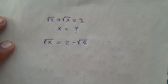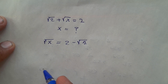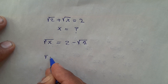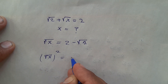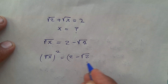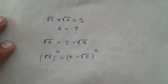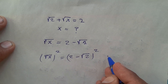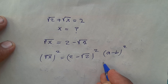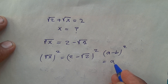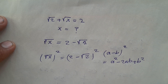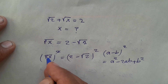And now I square both sides of the equation. This becomes square root of x squared equals to 2 minus square root of 2, whole to the power of 2. So this is in the form of a minus b whole squared, which equals a squared minus 2ab plus b squared. So the square and square root cancel out.